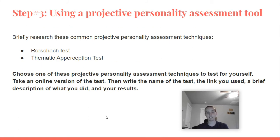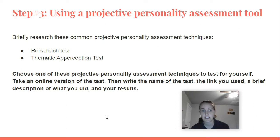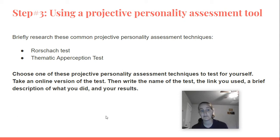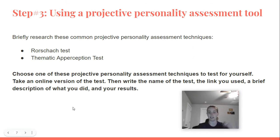After you do the objective test, you're going to take a projective personality assessment. Research these common assessment techniques: the Rorschach Test and the Thematic Apperception Test. Choose one of these projective personality assessment techniques to test for yourself. Take an online version of the test, then write the name of the test, the link you used, a brief description of what you did, and your results.